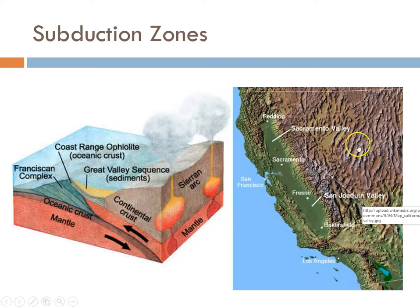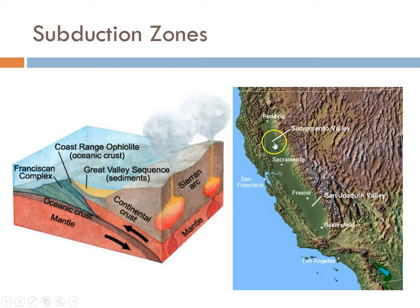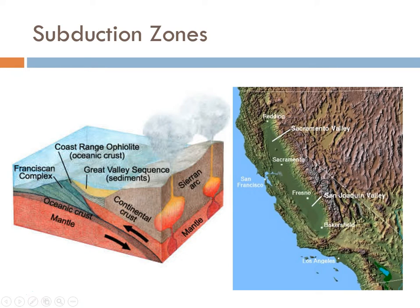So if we look at California right now: along the coastal range, these are all that folded-up accretionary wedge material. You drop down into the Great Valley, which is the forearc basin. And then way back here are the Sierra Nevadas — that ancient volcanic material represented by all those plutons that were underneath the volcanoes.